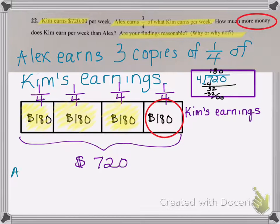We could also say that Alex earns $540 per week. Now, I'm getting that from the three copies of 180. I didn't write it down, but if I take these three yellow shaded boxes, three times 180 equals 540. So Alex earns $540.